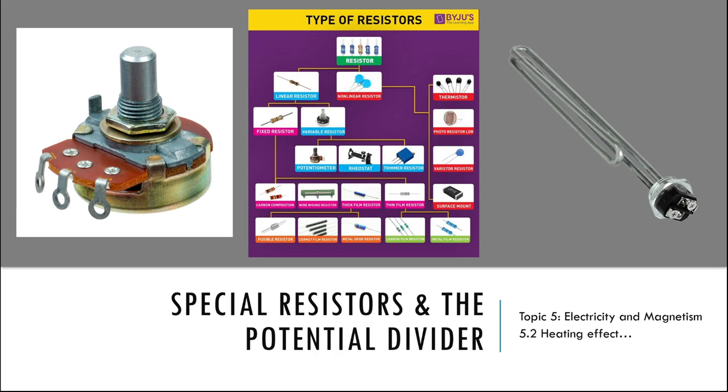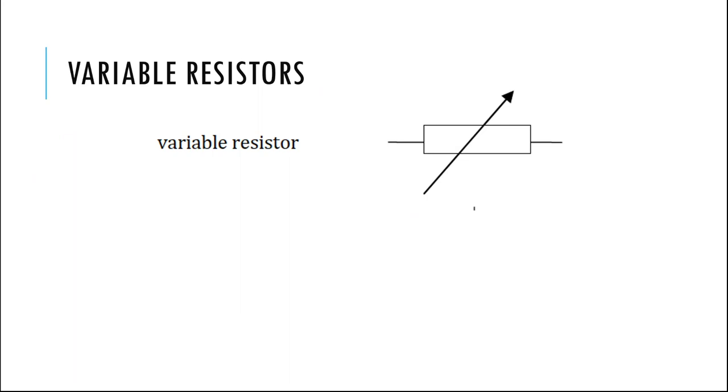Hello, in this video we're going to be talking about a couple specific types of resistors and also a special circuit called the potential divider that you want to be at least vaguely familiar with. You will see a bunch of symbols in your data booklet that show different circuit pieces. Many of them are types of resistors, that's what we're going to talk about.